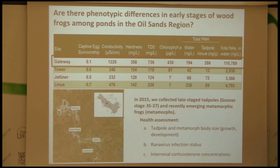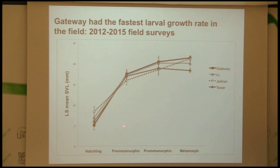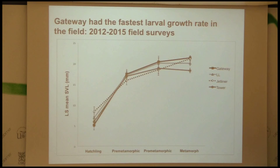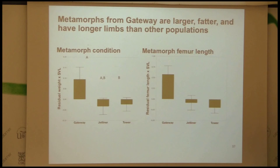It's also an area where there are ranavirus infections and die-offs periodically. In 2015, we collected tadpoles and looked at size to reflect growth and development, ranavirus infection status, and corticosterone concentrations. Across different ponds over four years of data — 2012 through 2015 — there are differences in body size, and Gateway has some of the largest body sizes. In my collection, animals from Gateway had the highest residual weight for their body size compared to two other populations, the longest femur length, a lot of fat, and a lot of water — though we didn't dry the tadpoles to determine exact composition.